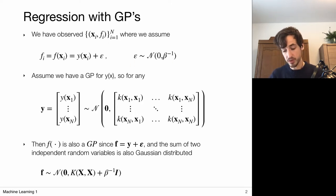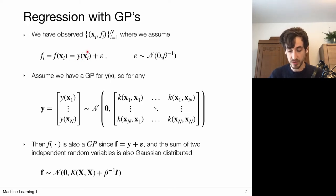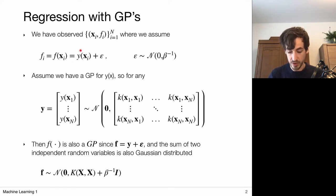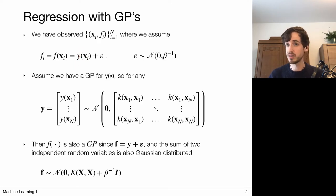We're also going to assume that we have a Gaussian process for this forward model from Xi to the corresponding output. This means we're not going to think of the outputs as being generated by a fixed function. There is some flexibility or variability among these functions that perform these mappings, which essentially reflects uncertainty in the model.